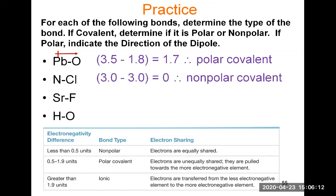For strontium and fluorine: fluorine has a value of 4.0 and strontium is 1.0, a difference of 3.0. That is clearly ionic. Strontium is on the left side of the periodic table and is a metal; fluorine is the most electronegative element and a non-metal. Together they form an ionic compound.